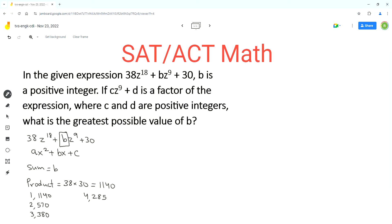Now let's analyze the sum of these numbers, which will be equal to b. If we add the numbers in the first pair, 1 and 1140, we get a sum of 1141. The sum of the numbers in the second pair is 572.